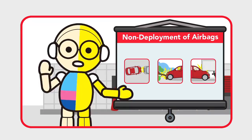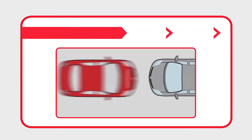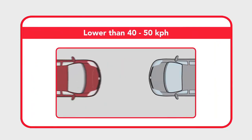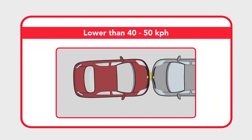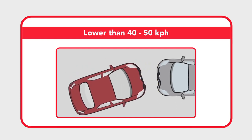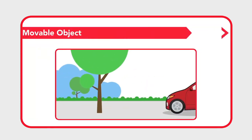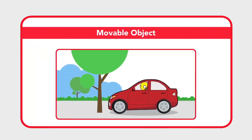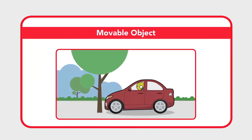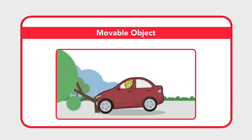Airbags may not deploy when in a frontal collision with a stationary car at a speed lower than 40 to 50 km per hour, or a pole-type collision, or any collision with a relatively movable object.